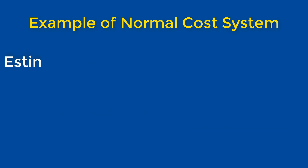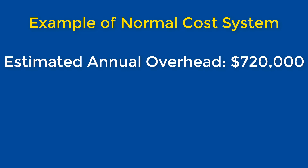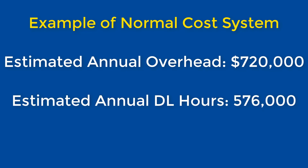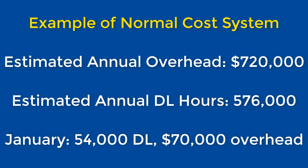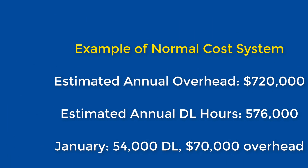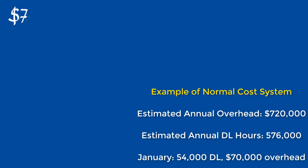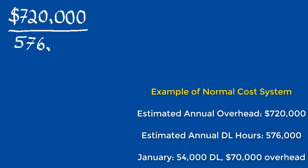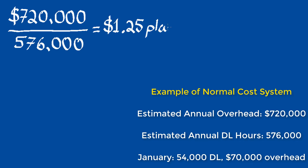In this example we have an estimated annual overhead of $720,000, an estimated annual direct labor hours of 576,000, and in January we had actual direct labor hours of 54,000 and actual overhead of $70,000. The first step is to determine the predetermined overhead rate by dividing the estimated annual overhead by the estimated annual direct labor hours, or estimated annual usage.